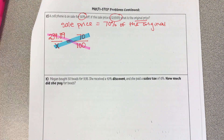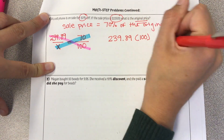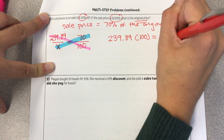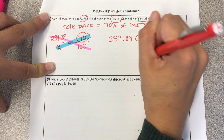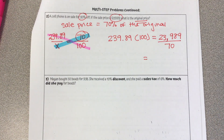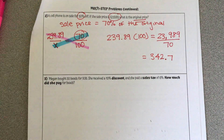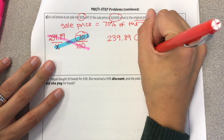I'm going to solve this proportion. $239.89 times 100 equals 23,989, divided by 70, equals $342.70 — and if we're talking about money, we need two decimal values, so $342.70.